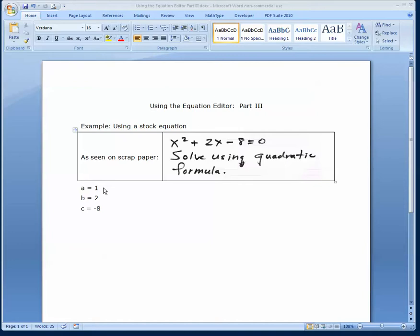Coming down, we recognize that the values of our coefficients are a is equal to one, that's the coefficient of x squared, and b is two, the second coefficient, and c is minus eight, the third coefficient right there.